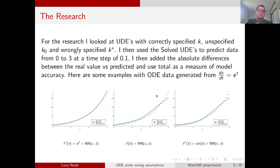So how exactly did we do this? For the research, I looked at UDEs with correctly specified k, unspecified k₀, and a wrongly specified k*. I then used the solved UDEs to predict data from 0 to 3 at a time step of 0.1. I then added the absolute difference between the real value and our predicted solution and used the total as a measure of model performance.